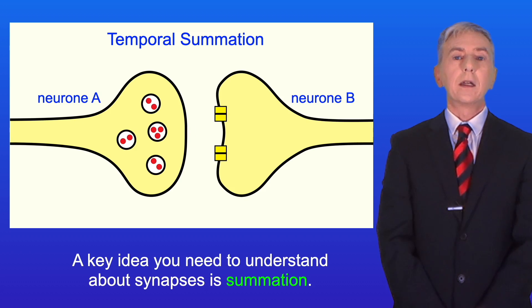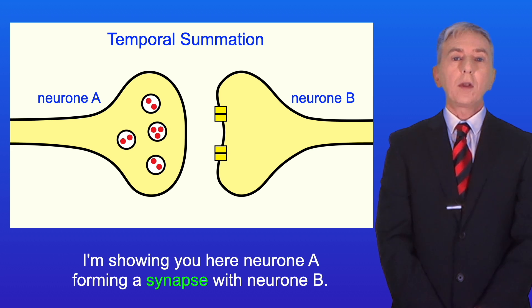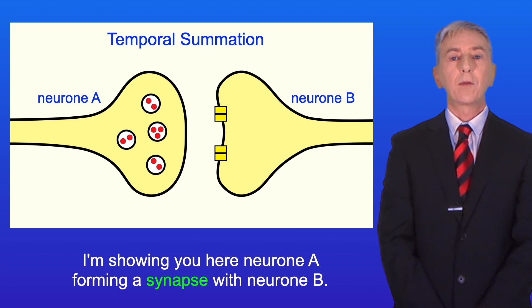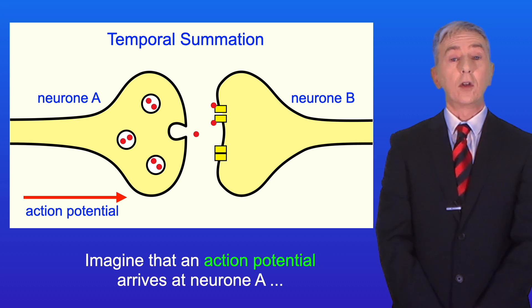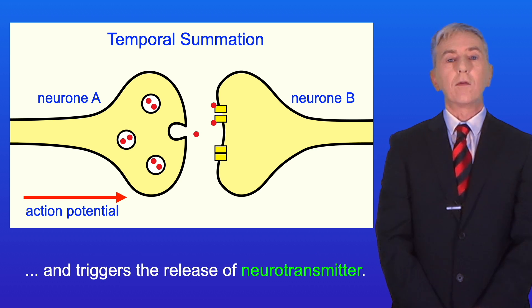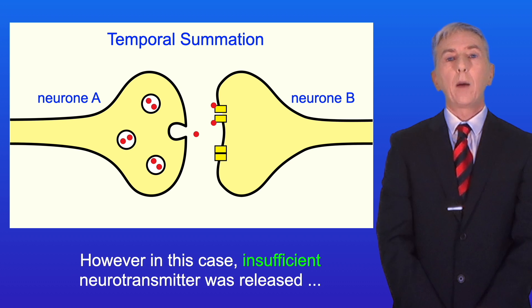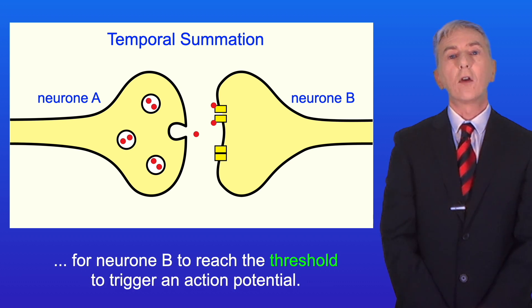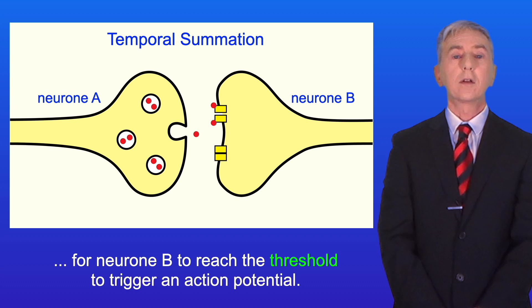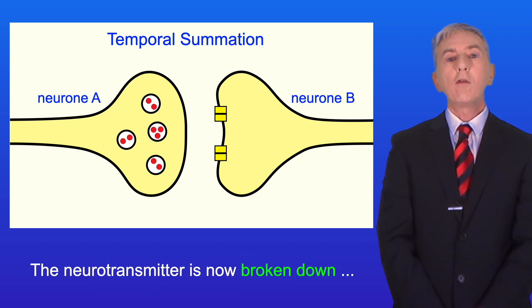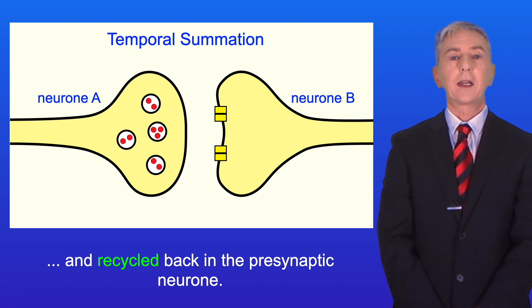Now a key idea you need to understand about synapses is summation. I'm showing you here neuron A forming a synapse with neuron B. Imagine that an action potential arrives at neuron A and triggers the release of neurotransmitter. However, in this case, insufficient neurotransmitter was released for neuron B to reach the threshold to trigger an action potential. The neurotransmitter is now broken down and recycled back in the presynaptic neuron.